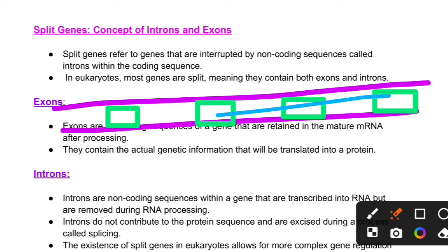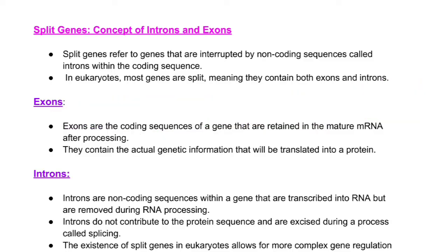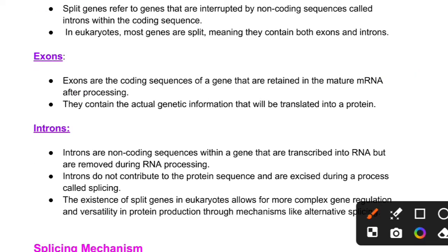As shown in purple, the coding sequences and non-coding sequences — introns — are indicated. Most genes are in split format, meaning they contain both coding and non-coding regions. The coding sequences are what we see in mature mRNA, and they are involved in the translation process.